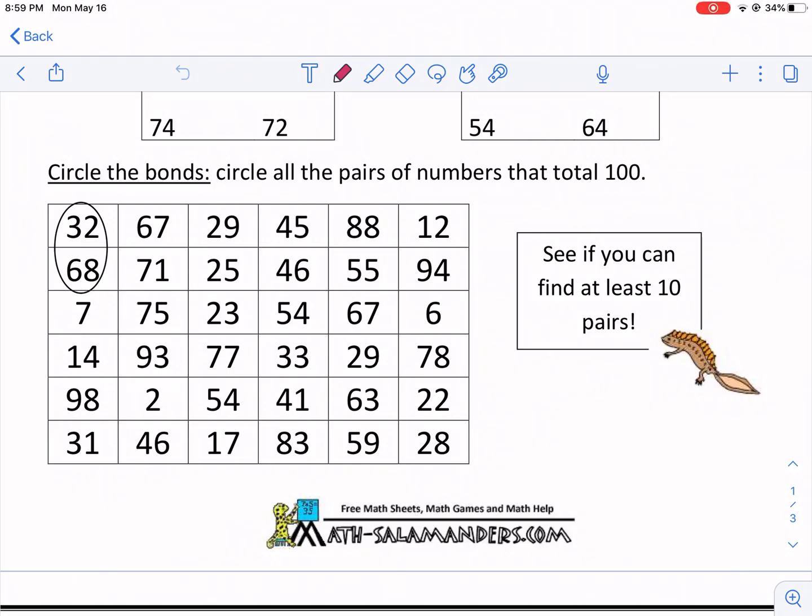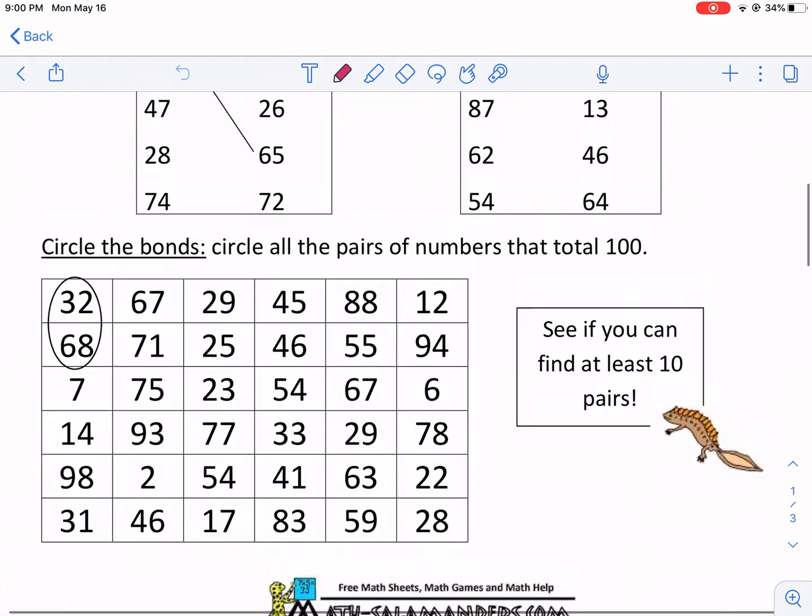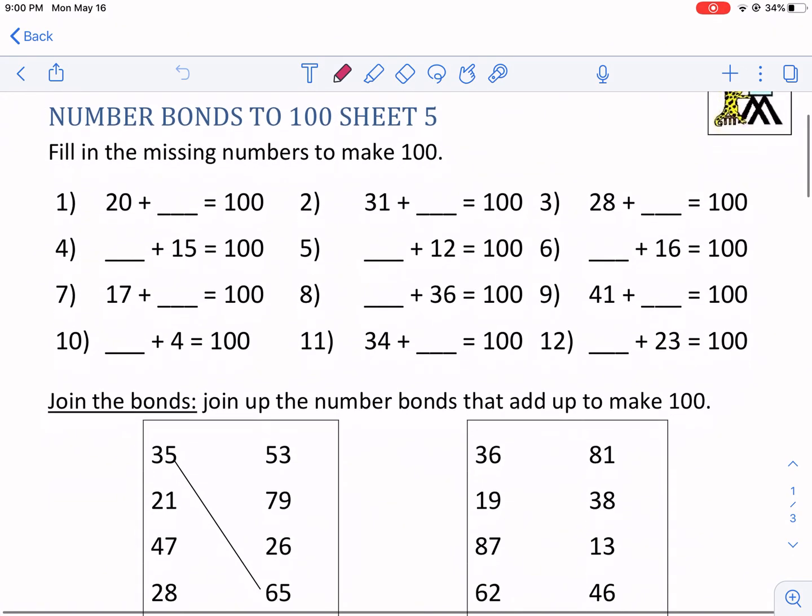Hi everyone, this is Mr. West. You're watching a math salamanders walkthrough video, and this one is on number bonds to 100 sheet 5.